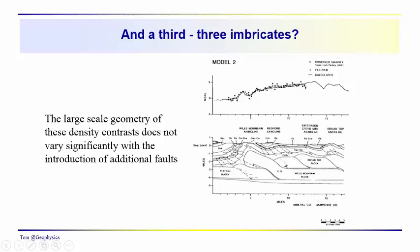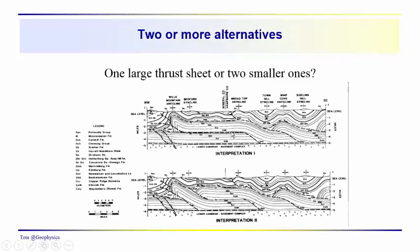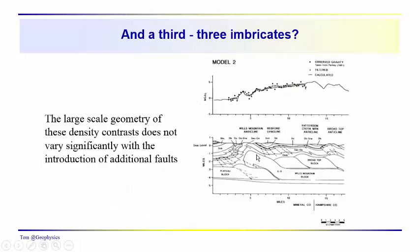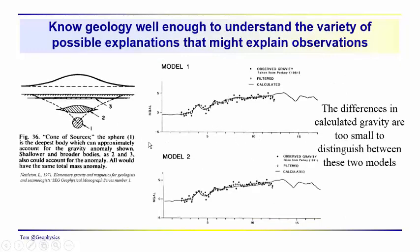We're really unable to distinguish using gravity models between the different scenarios: one continuous sheet, two imbricates, three imbricates, and so on. This is something where we'd have to try to find some additional information, perhaps some well log data. Maybe some more detailed local surveys would help draw some distinctions, but not based on the larger models that we've seen.